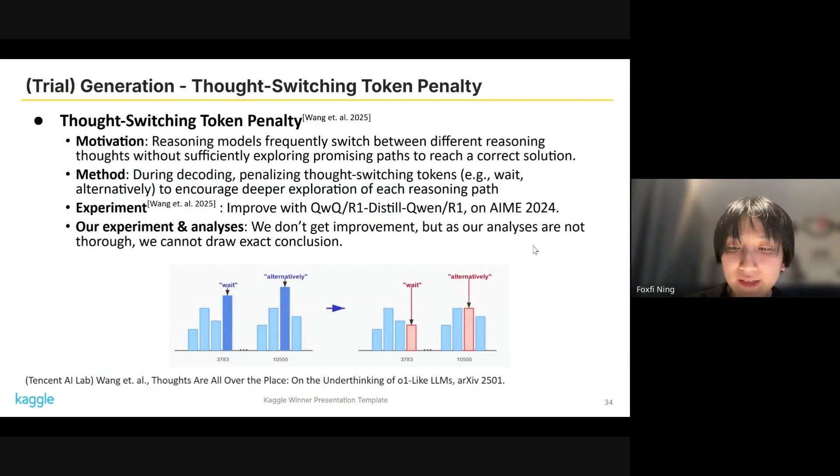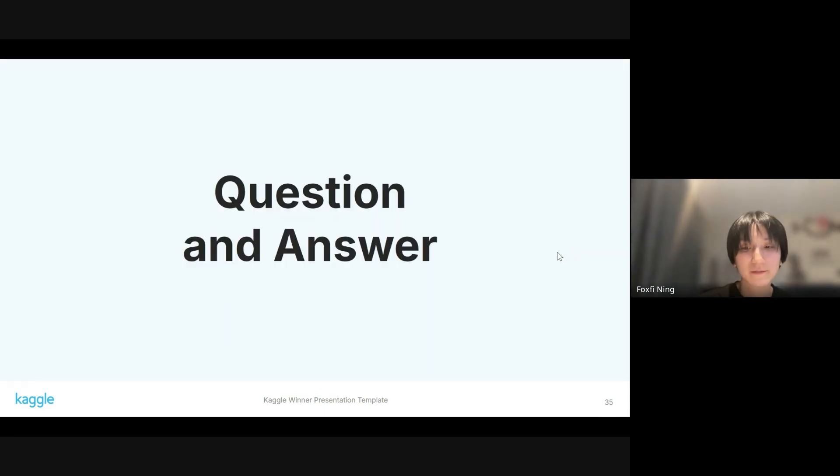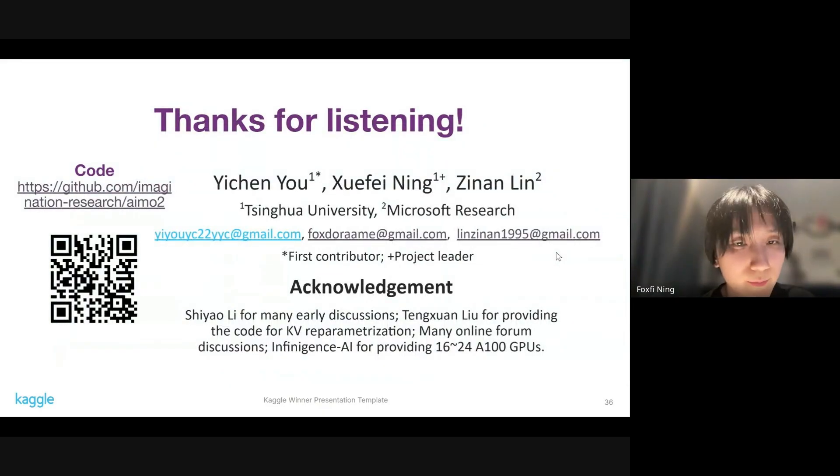We also tried some techniques such as penalizing thought-switching tokens in order to avoid the reasoning model too frequently switching between different reasoning thoughts without sufficiently exploring each one, but we didn't get improvement. We cannot draw exact conclusions on whether this type of method can work or cannot work because we did not do that thorough analysis here.